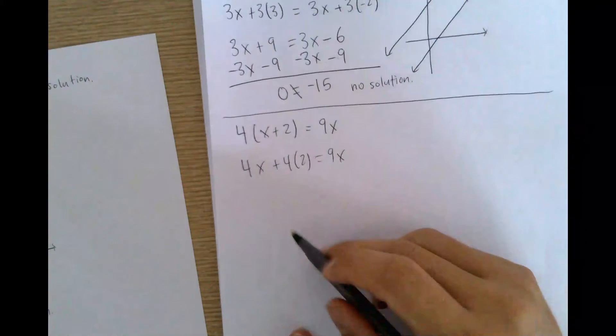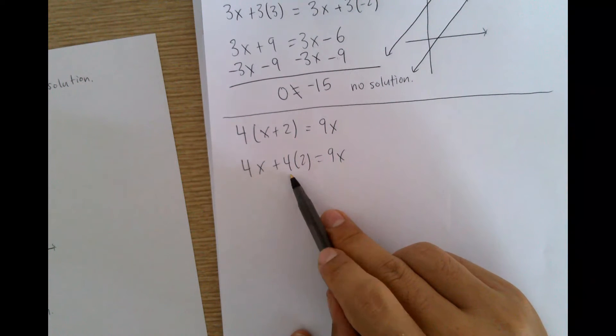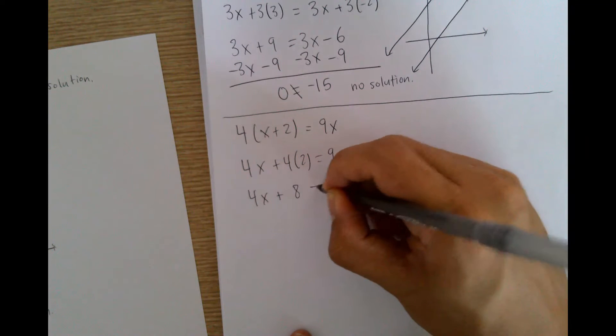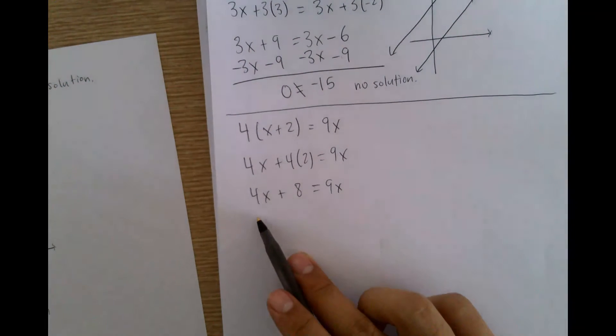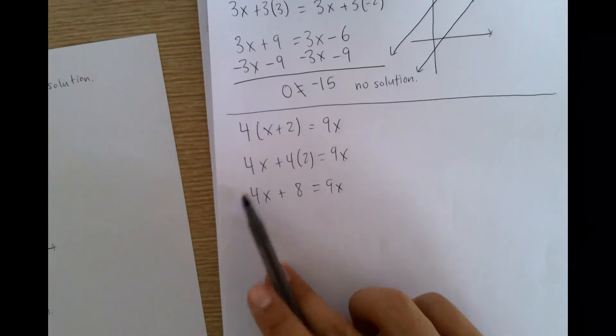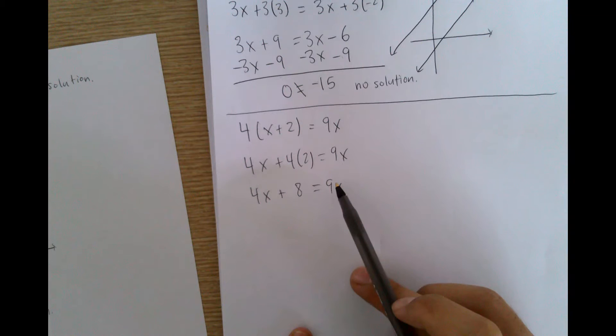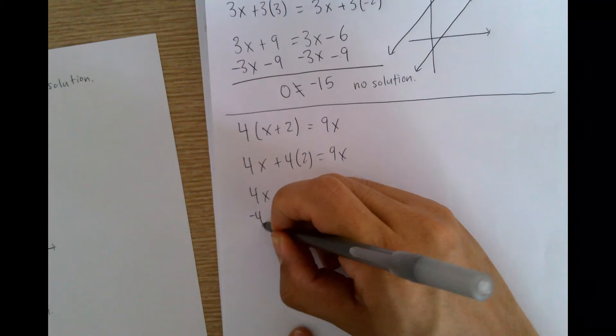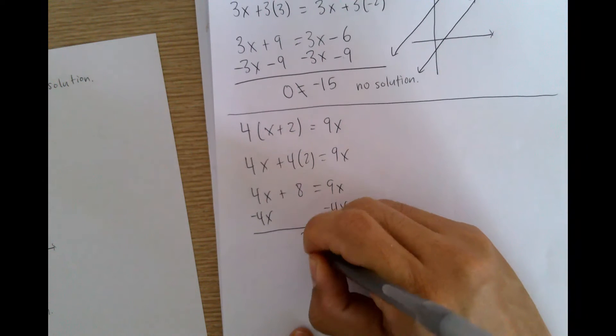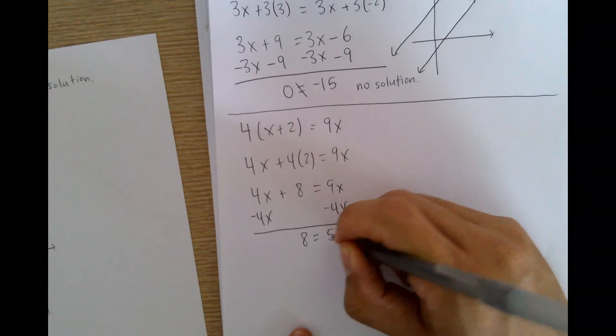I'm going to go ahead and simplify 4 times 2, which is 8 equals 9x. I want to move all my variables to one side. I usually want to move my smaller variable to the bigger variable side. So I'm going to go ahead and subtract 4x on both sides. I have positive 8 is equal to 5x.